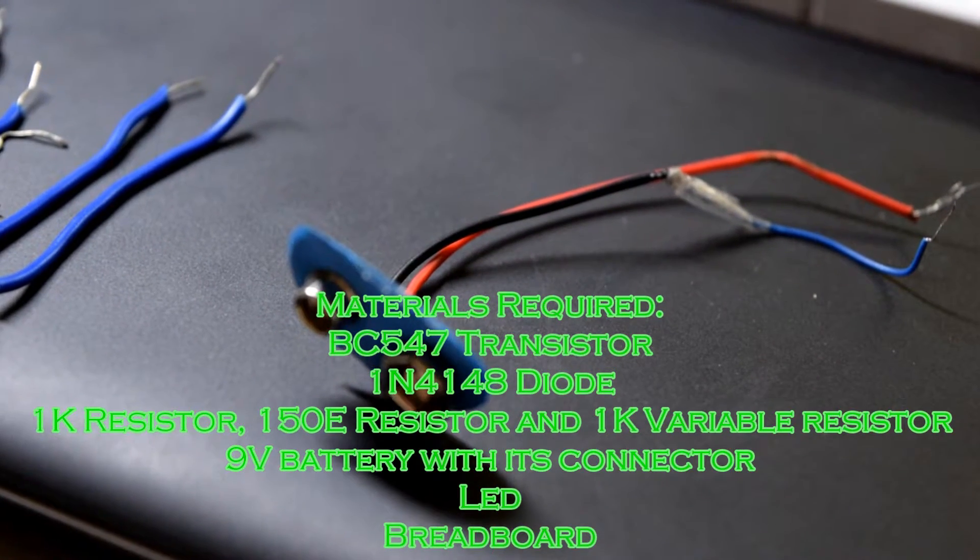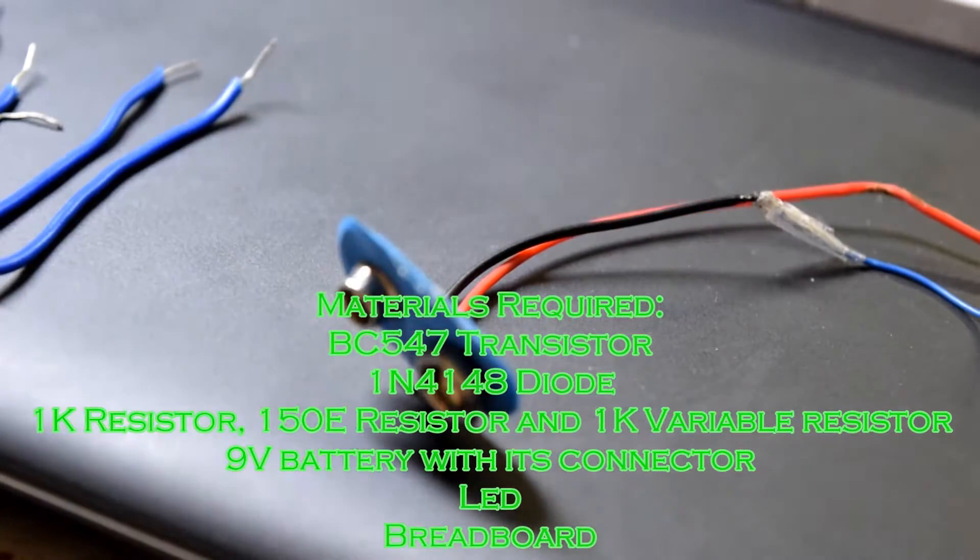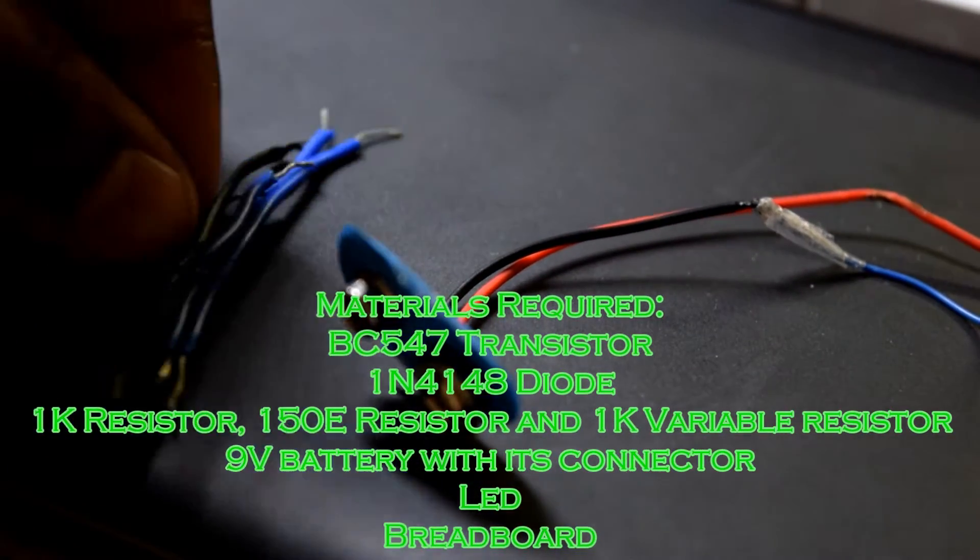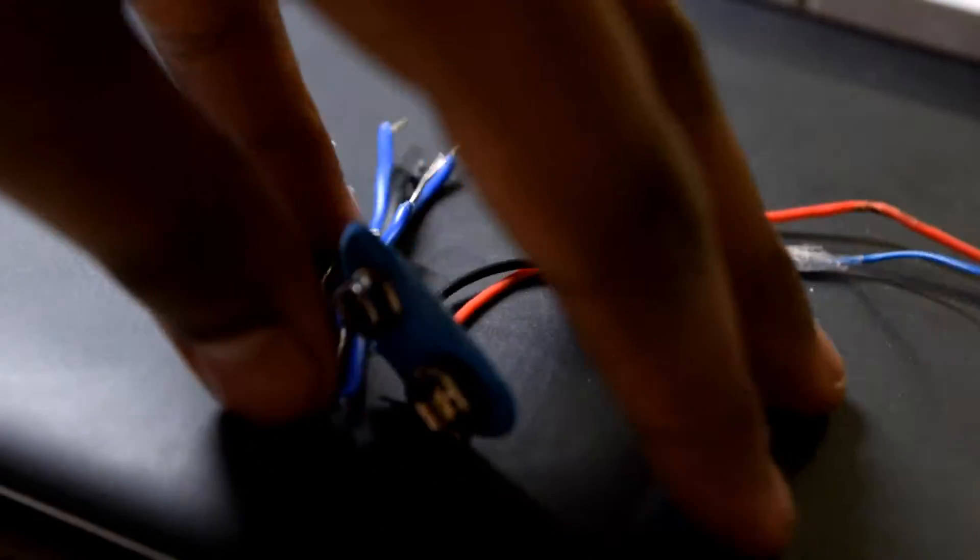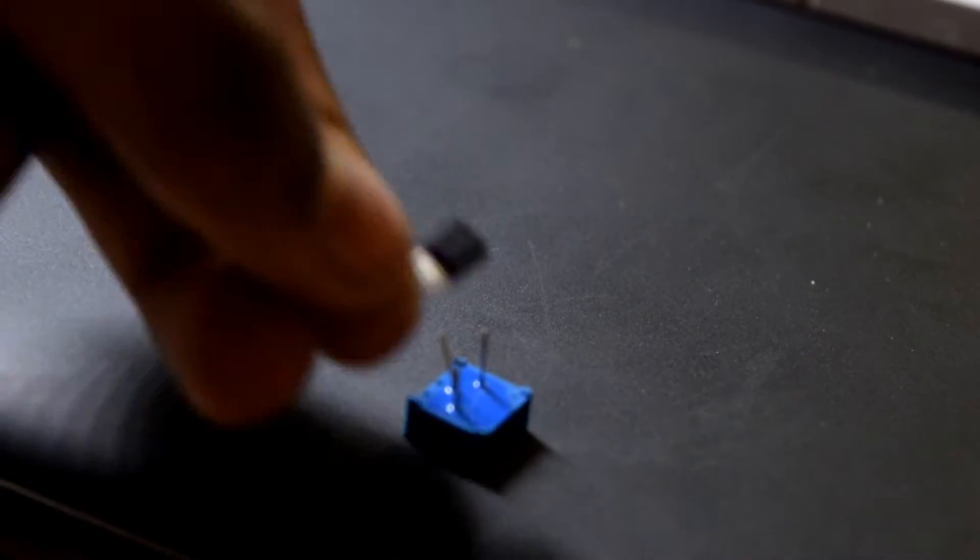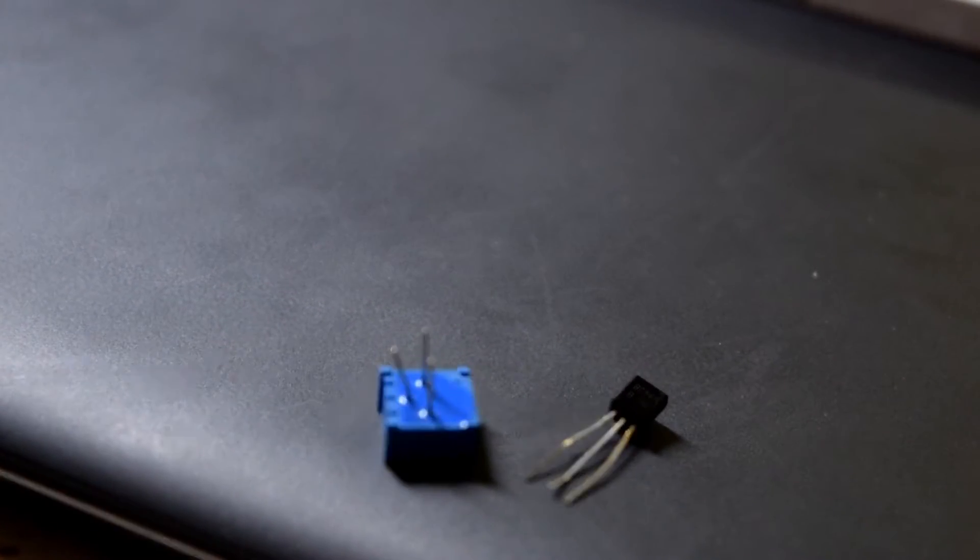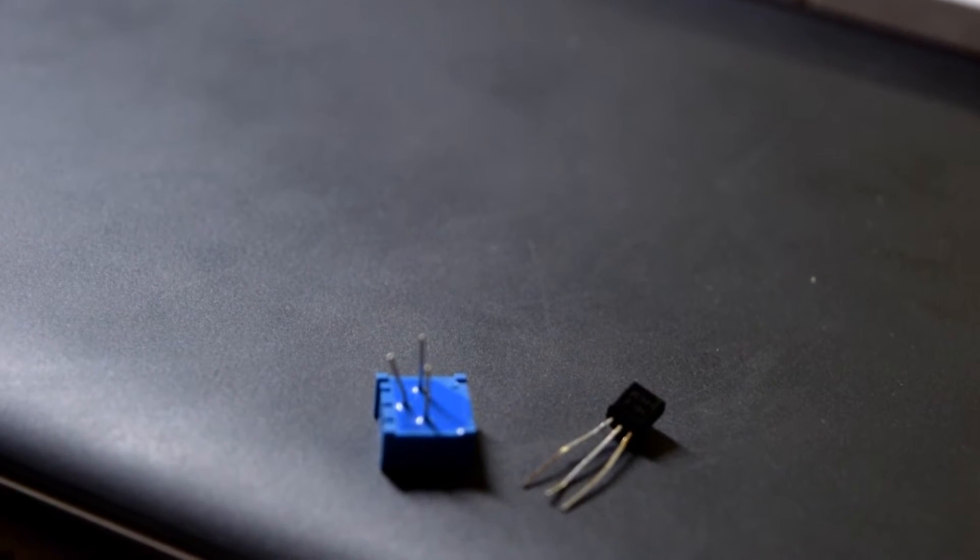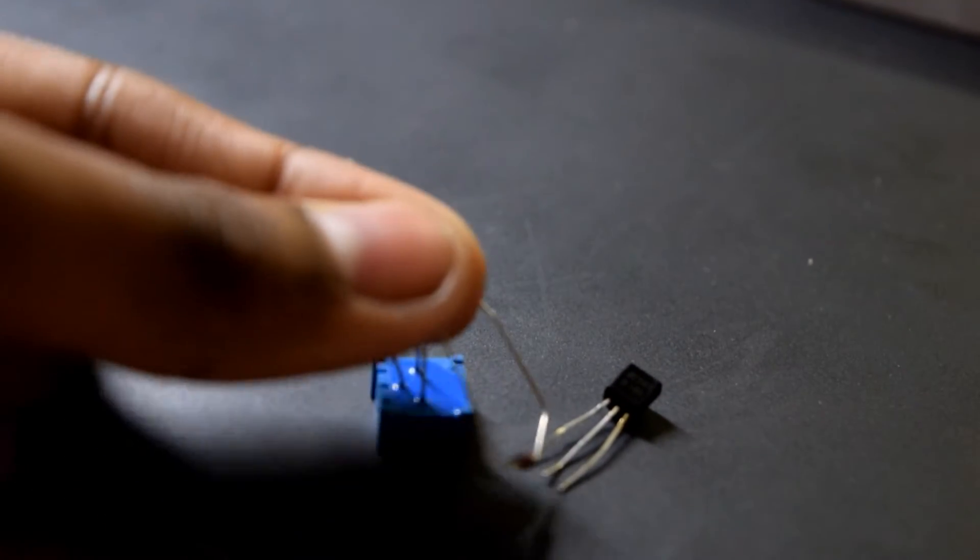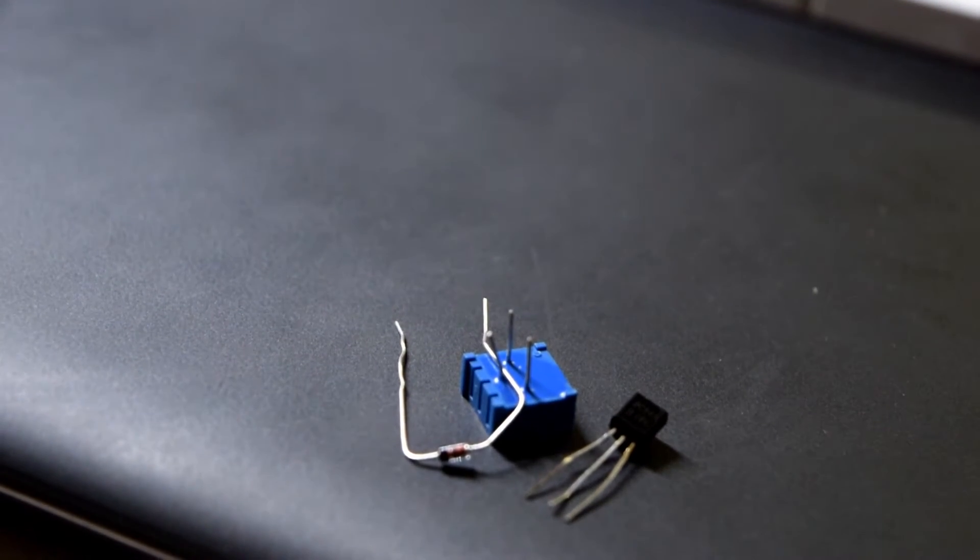Here are the materials that you will require for making the fire alarm: 9 volt battery connector, breadboard connectors, a 1K variable resistor, a BC547 transistor, a diode.